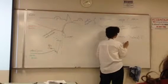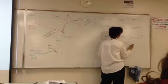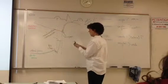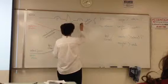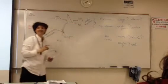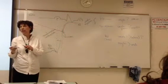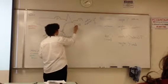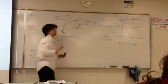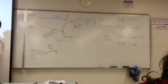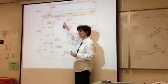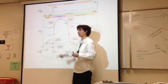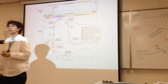Aortic pressure is greater than ventricular pressure. So at this point in time, you can make your cells close. Notice that close is at a higher pressure than it opens at. A higher aortic pressure closes the semilunar valve.